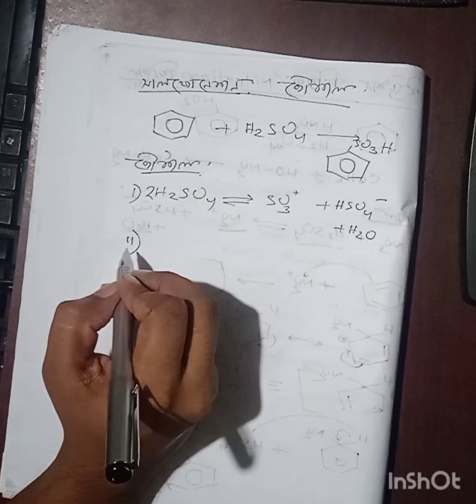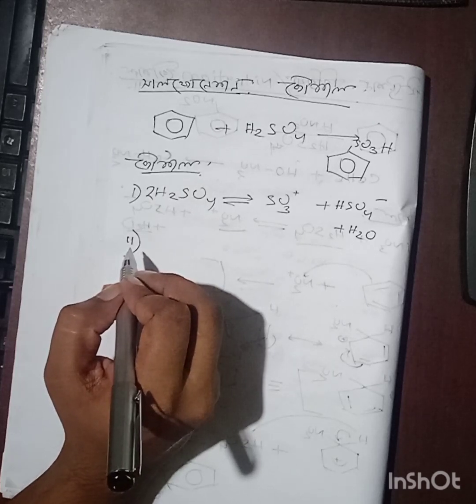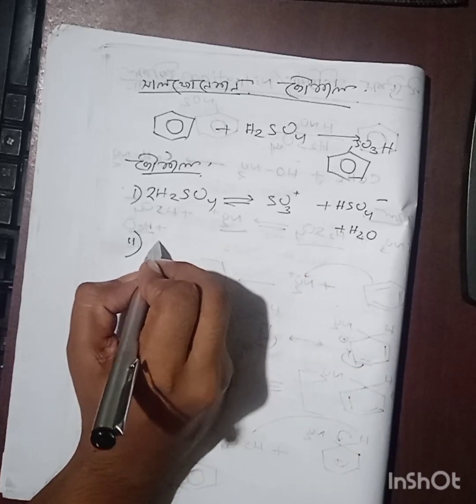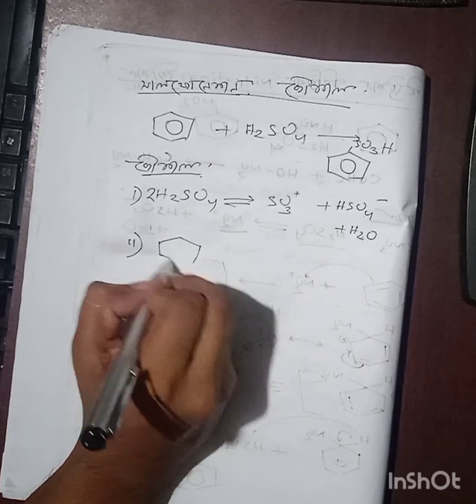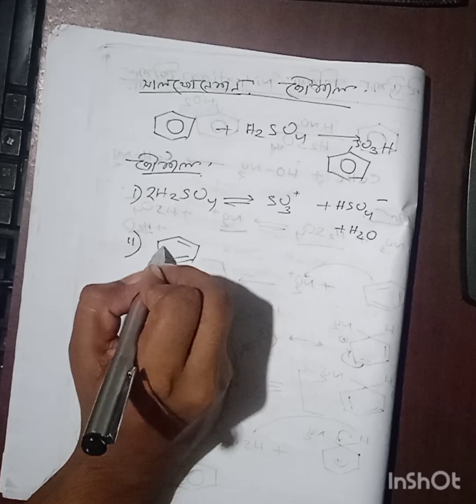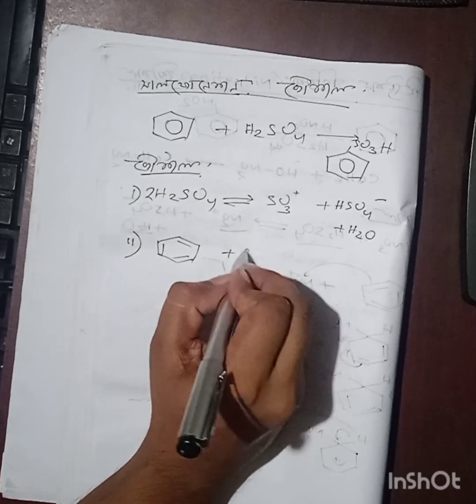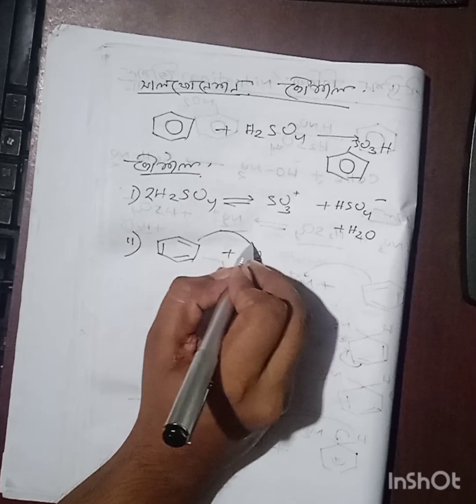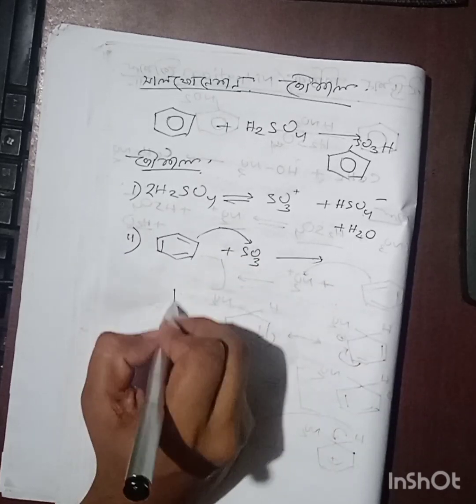Most important is the mechanism. So we write benzene - benzene has three double bonds. SO3, the electrophile, attacks benzene.